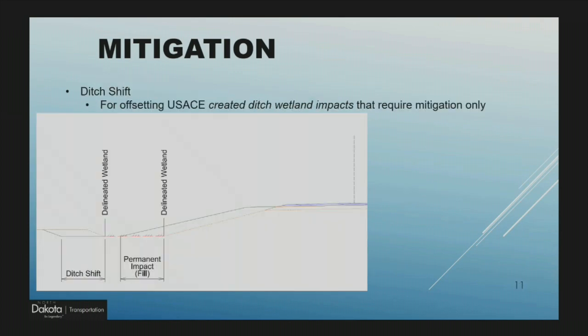Another mitigation type we call ditch shift — kind of self-explanatory. This is for offsetting Corps ditch wetland impacts that require mitigation; it only applies to ditches. In the figure you can see a fill line being placed into the wetland. The idea is to excavate the back slope for the same acreage of fill placed in that ditch wetland.